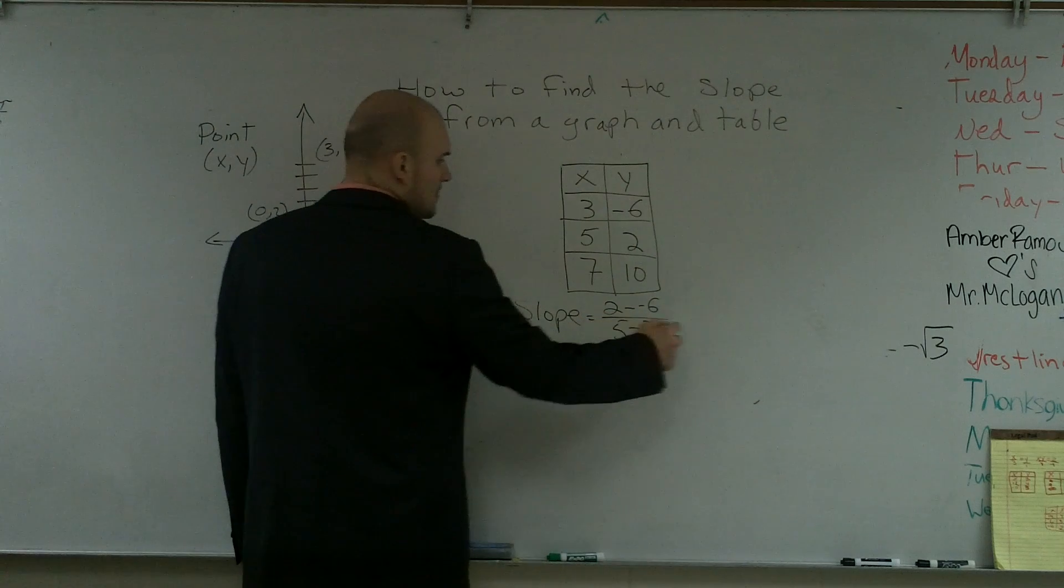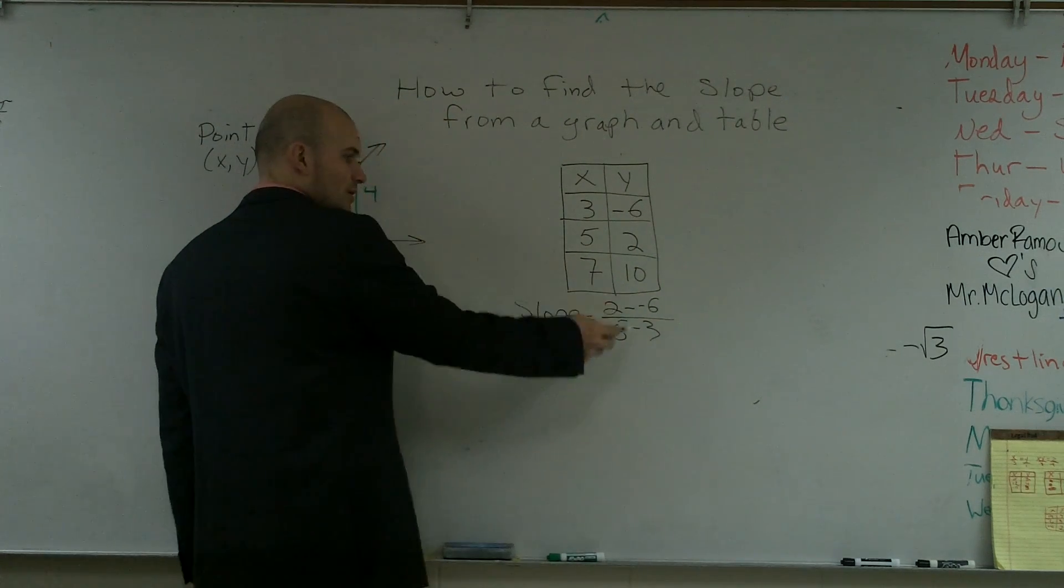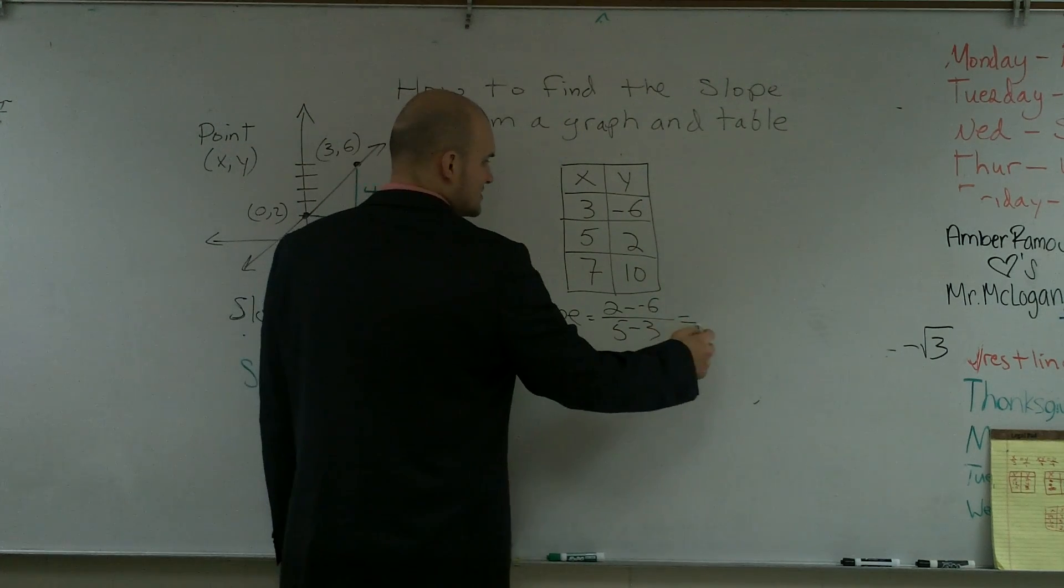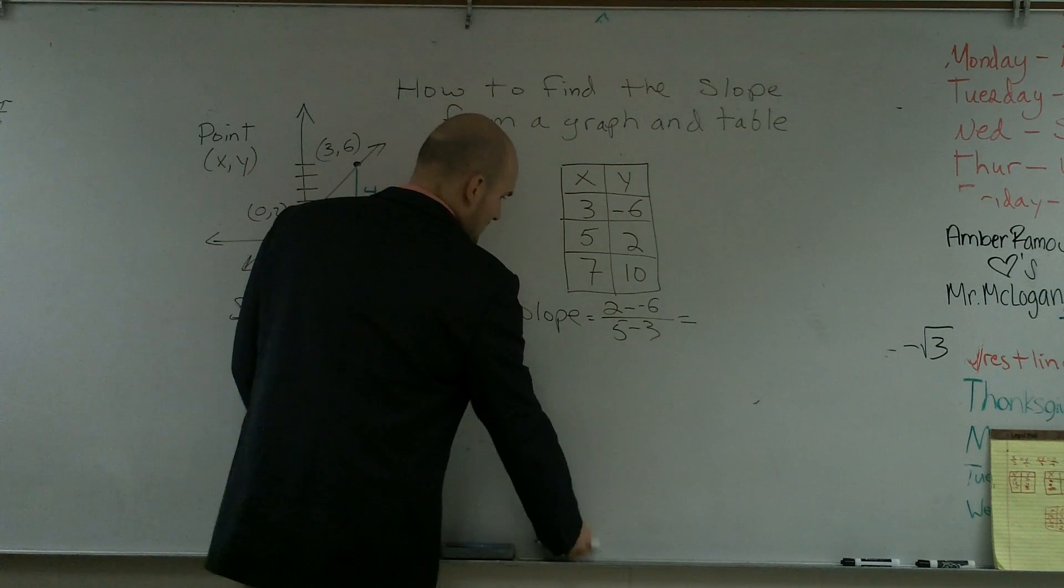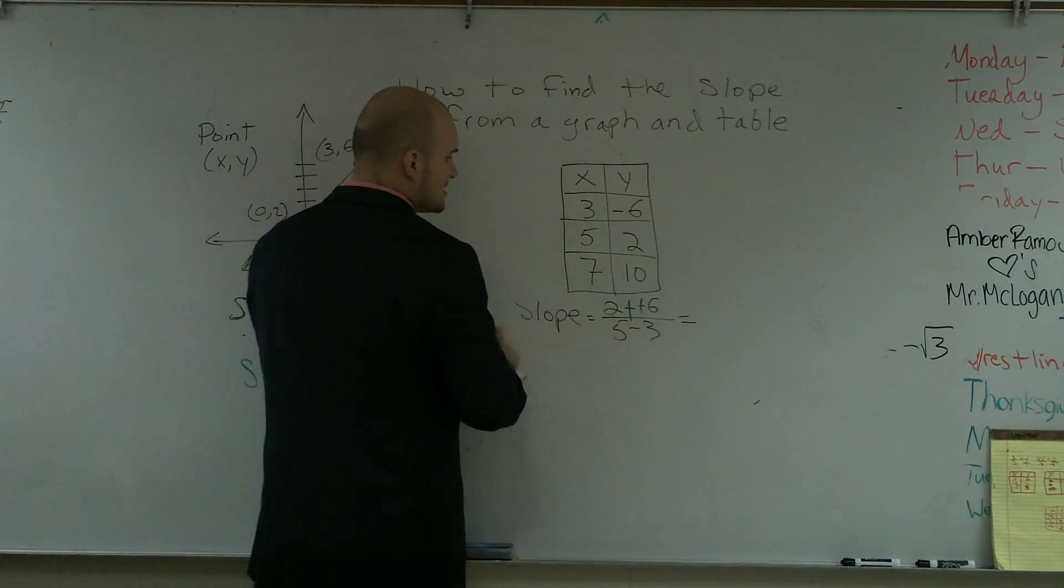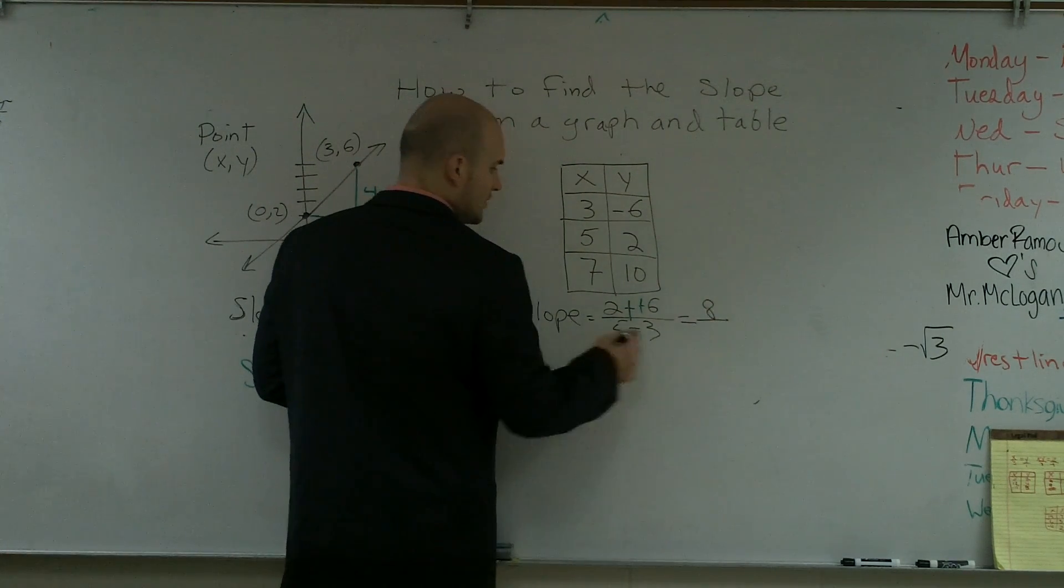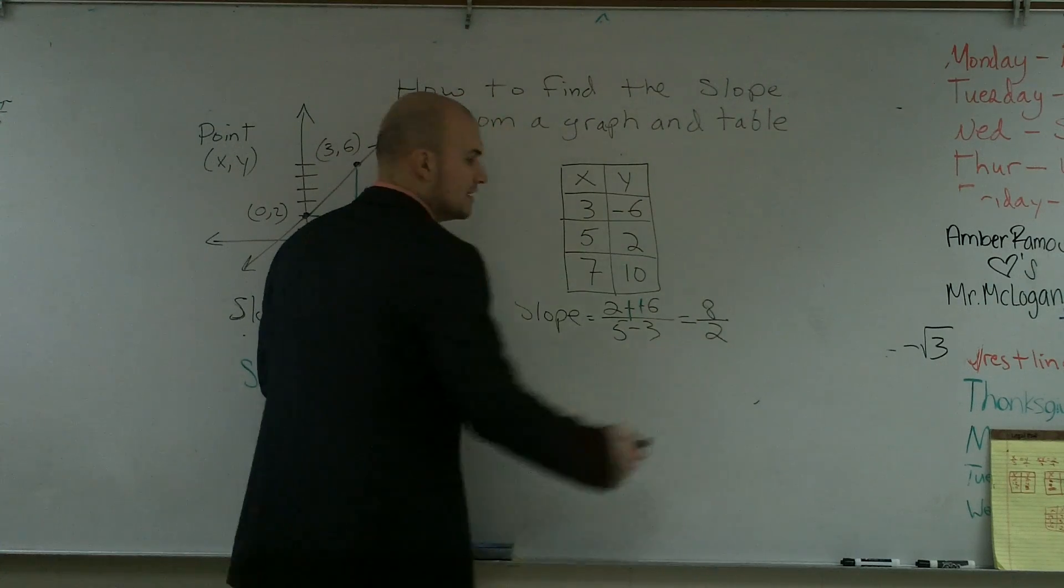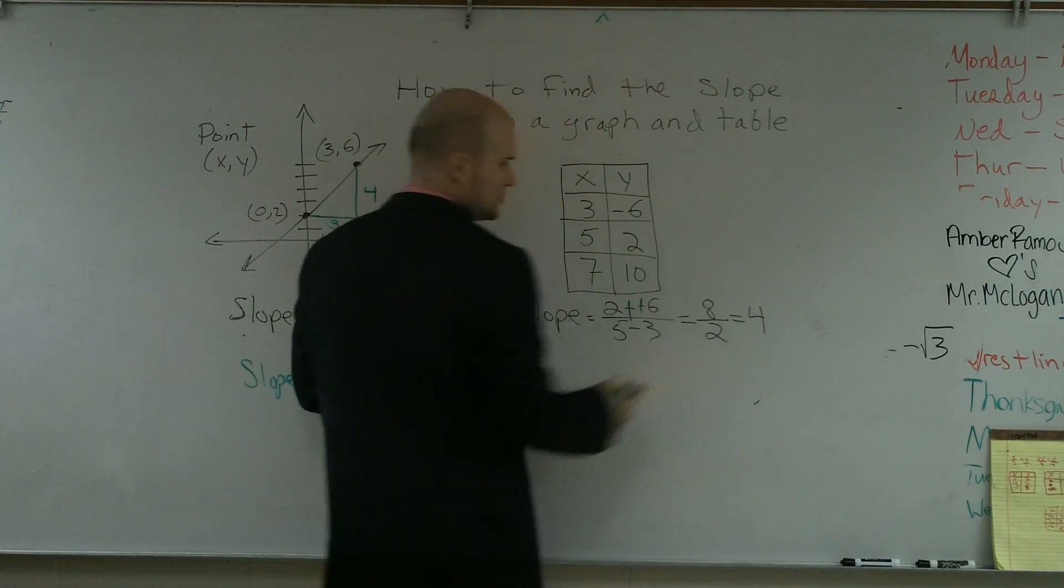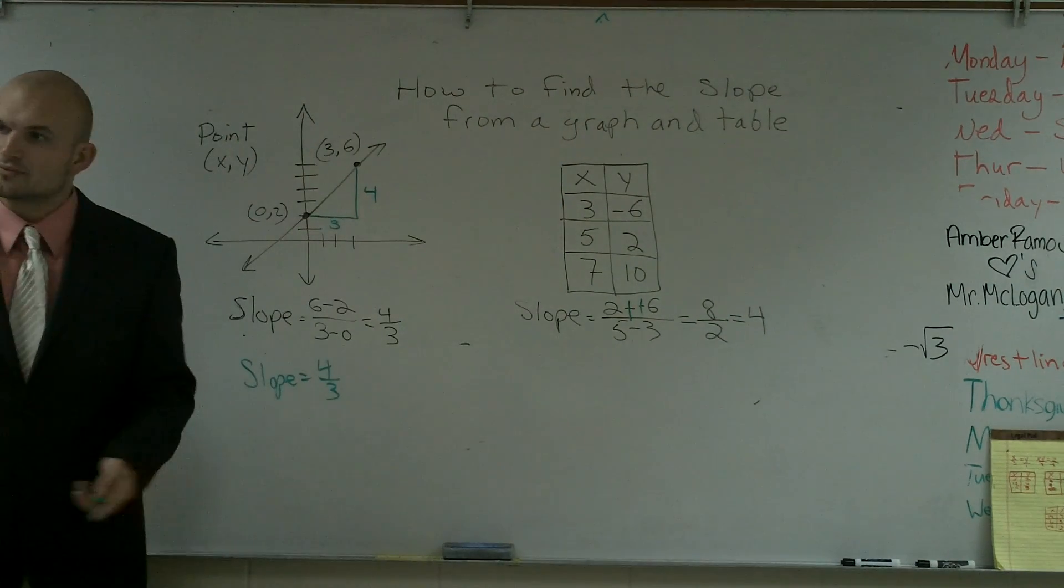Now, this is a different problem. Remember, it's a ratio, so it's one over the other. 2 minus a negative 6, those both become positive, equals 8 over 5 minus 3 is 2. Therefore, my rate of change equals 4, or slope. They're interchangeable.